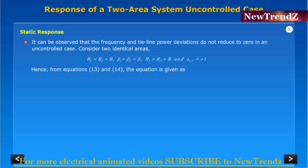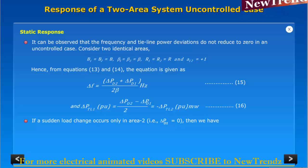Consider two identical areas. Hence from equations 13 and 14, the equation is given as follows. If a sudden load change occurs only in area 2, that is ΔPD1 equal to zero, then we have the resulting equations.